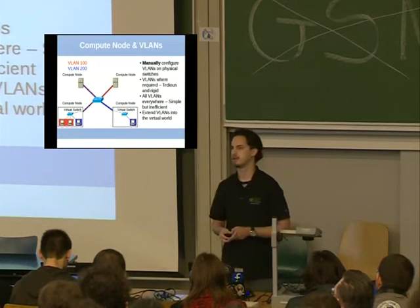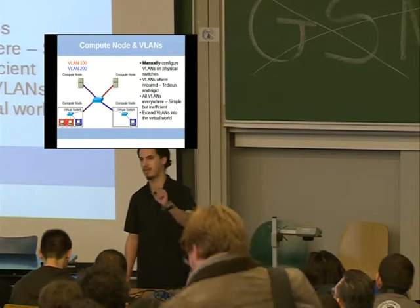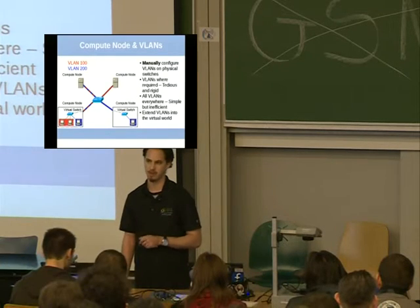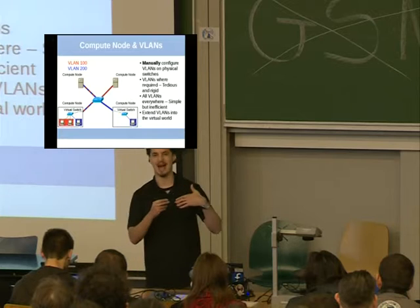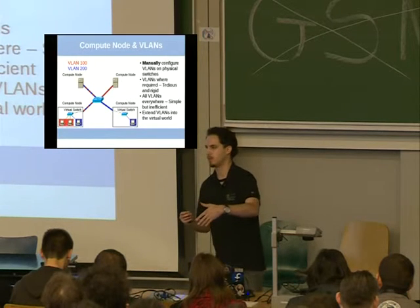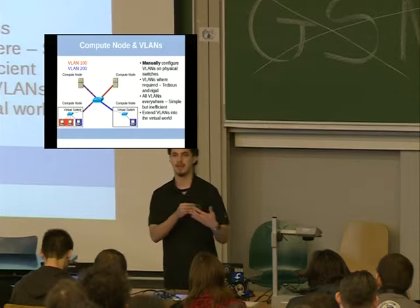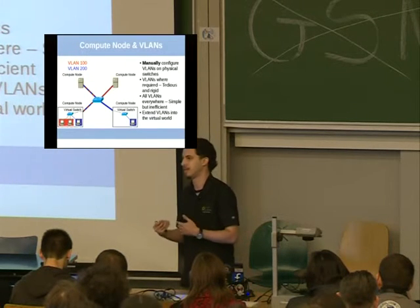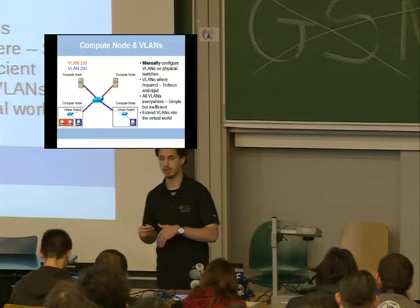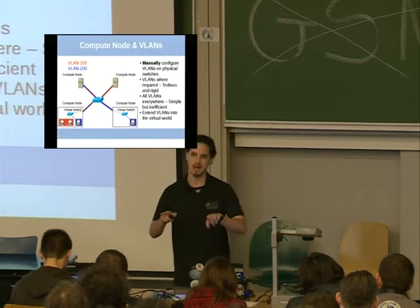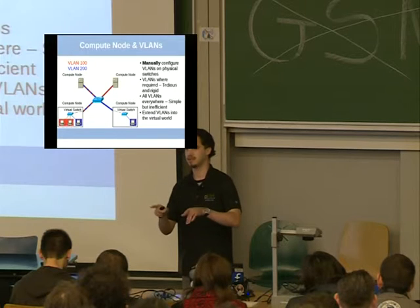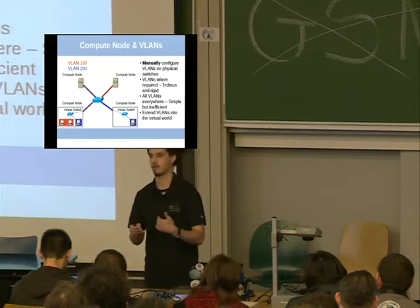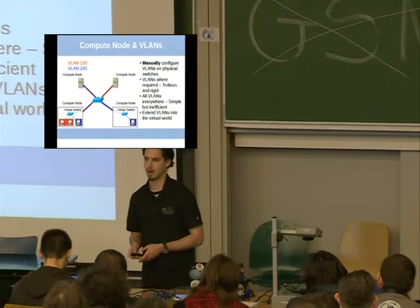An access port is basically telling: this specific port is in VLAN 100, the red VLAN, and the traffic coming out of that access port will be completely untagged. The VM or host connected to that access port doesn't know it's in a VLAN, but the switch does. So if the switch has two access ports in different VLANs, the switch can do filtering — it can either forward traffic from one port to the other or not.